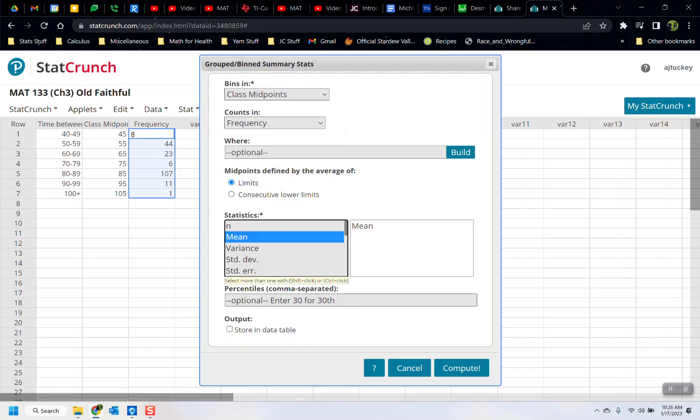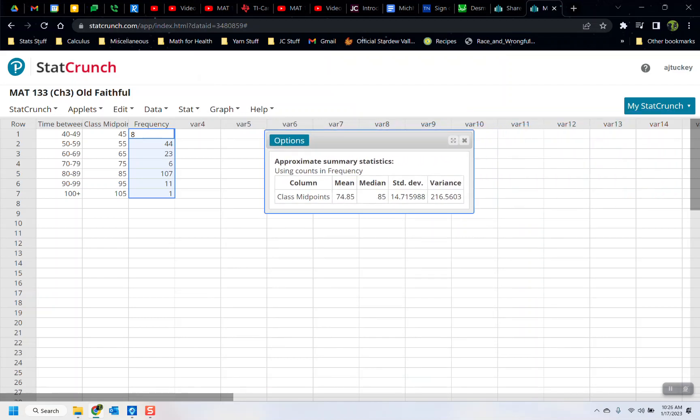So let me bring that away. Stat, summary stat, grouped binned. The bins are—you want to say time between interruptions, but you can't because it won't understand what you're doing. You have to pick the class midpoints. And then the counts are the frequencies. We want the mean. We want the variance. We want the standard deviation. So I'm doing control click. And then I lift up on my control button and I'm going to scroll down and there's the median right there. So I've got all four of the things that I want. Now, if you want them in the order that they were asked for, you can roam around. So mean, then control click on the median, then control click on the standard deviation, then control click on the variance.